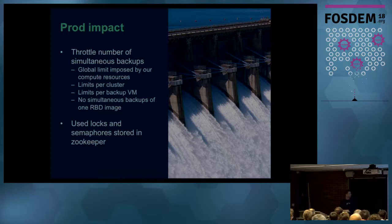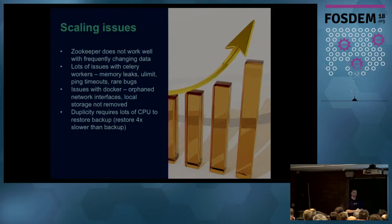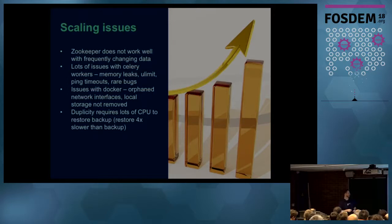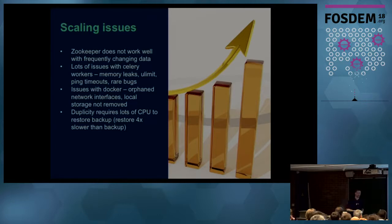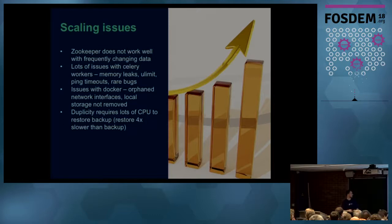Of course, scale always shows issues even if you test locally — you can never predict large-scale production behavior. ZooKeeper sometimes had problems because it's good for rarely-changing data. When you do frequent semaphore acquisitions, ZooKeeper generates lots of transaction logs and snapshots that fill up disk space. We fixed this by increasing the number of transactions before ZooKeeper takes a snapshot.